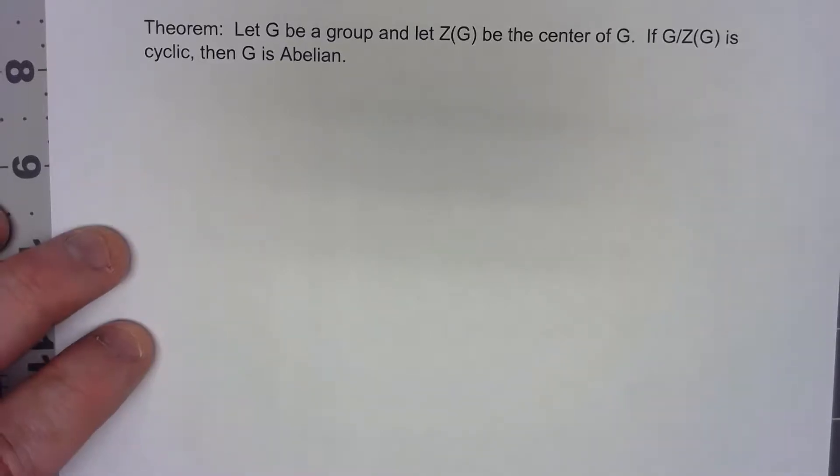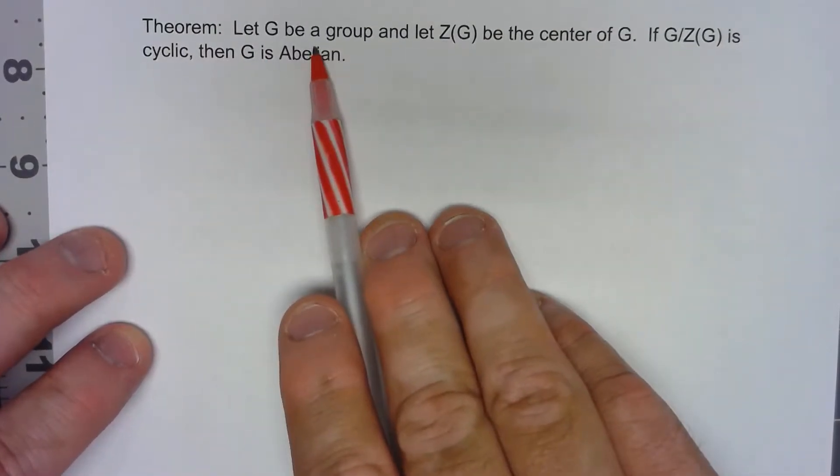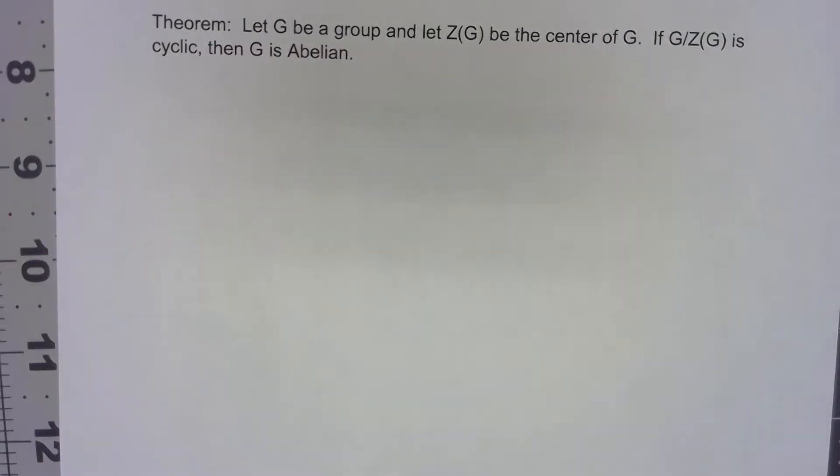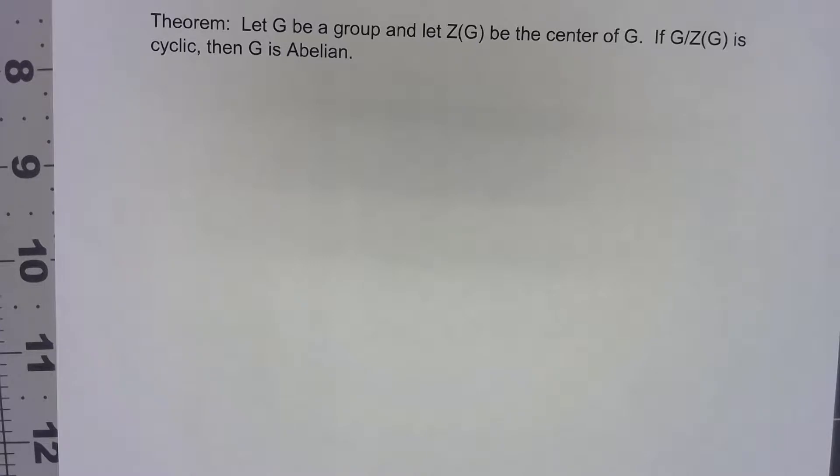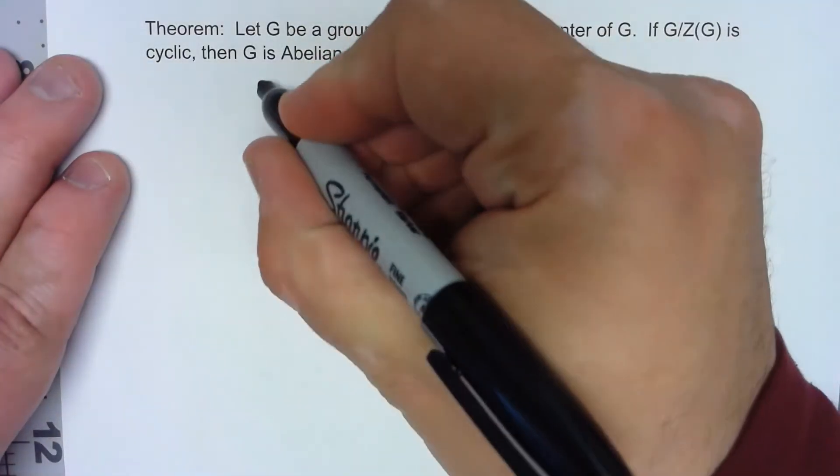Let's take a look at this theorem that involves the factor group stuff we've been looking at. So we've got a group and we've got the center of G. Before I actually get into everything going on here, let's remember what the center of G is.